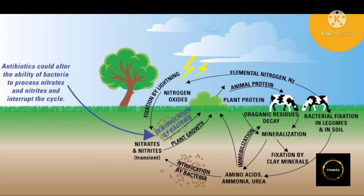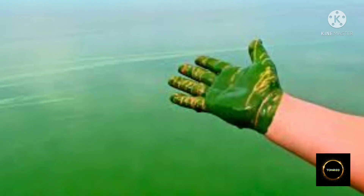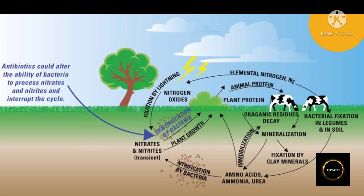The atmospheric nitrogen cannot be taken directly by plants and animals. Certain bacteria and blue-green algae present in the soil fix nitrogen from the atmosphere and convert it into compounds of nitrogen.